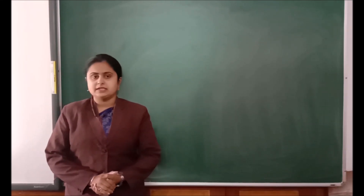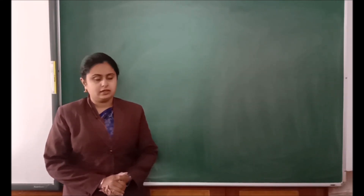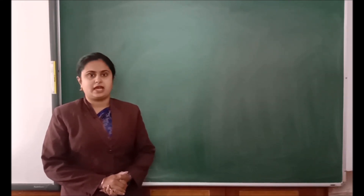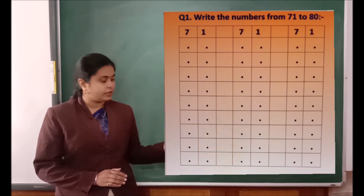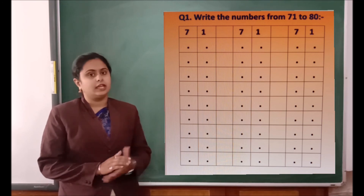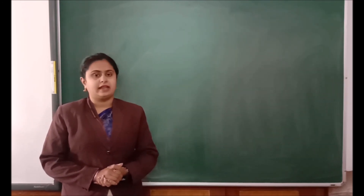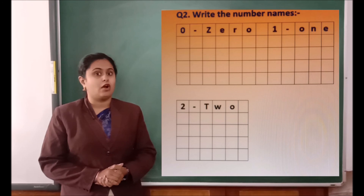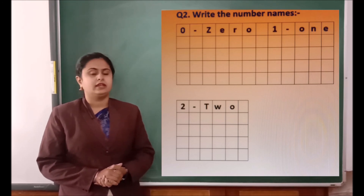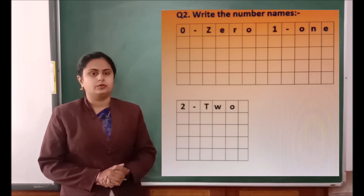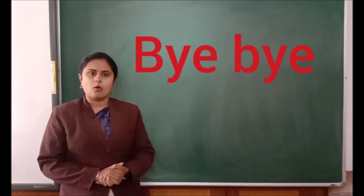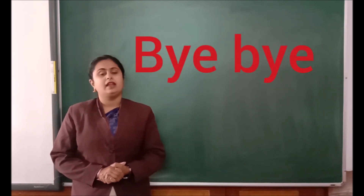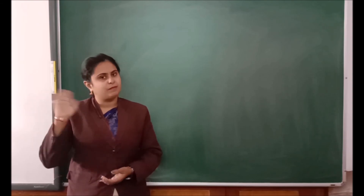Children, now I will end our class here. Your today's homework is that you have to write numbers from 71 to 80 in your copy, and you have to learn the spellings of 0, 1, and 2. Okay children, this is your homework. We will meet in our next class. Till then, bye-bye.